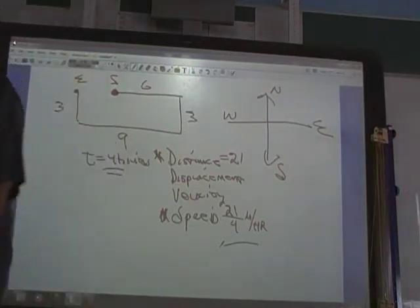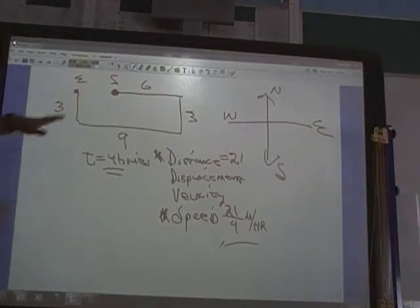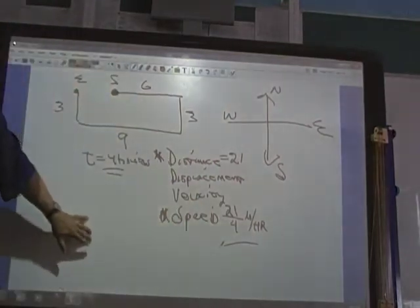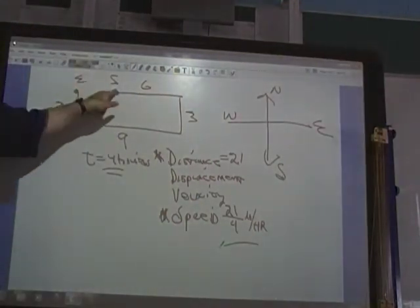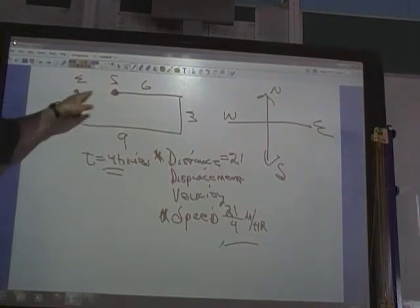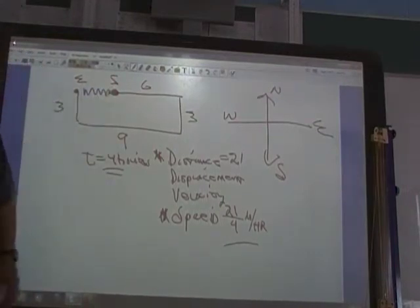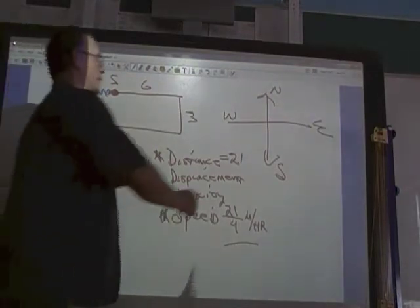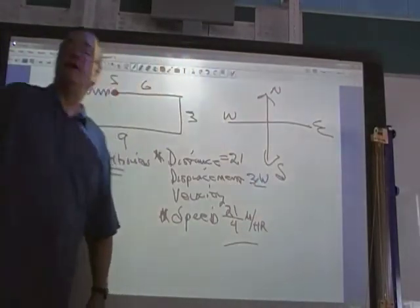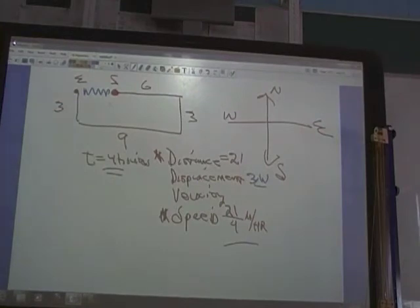Now I want to know my displacement. Displacement is the difference between where I started and where I ended. So I could do all kinds of loops here. All I care about is start to finish. This displacement right here. That's all I care about. So therefore, my displacement looks like three units west. Three west and three negative and three with an arrow pointing to the hallway all say the same thing.